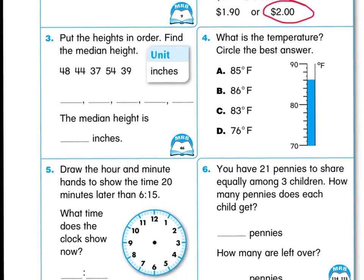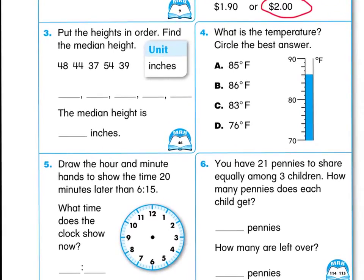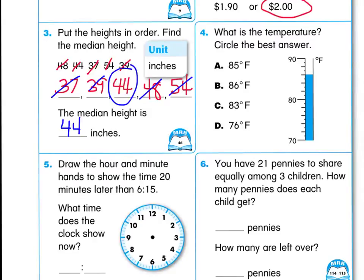Let's move down to box number three. It says to put the heights in order and find the median height. So you need to put them in order from smallest to largest. I'm going to look at my choices here and see that 37 is the smallest. It's a good idea to cross those out. 39 would come next. 44 would be next. 48. And then 54. Now, if you remember to find the median, you kind of cross off that first one, the last one, then the first one, and the last one until you find the one that's in the middle. The median means the middle. The middle number is 44 inches. The median height, 44 inches.